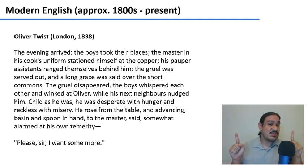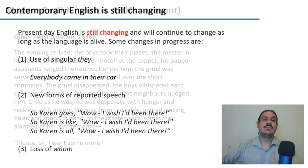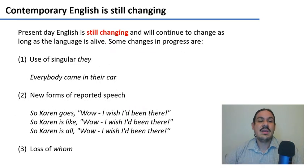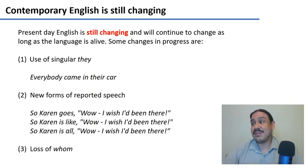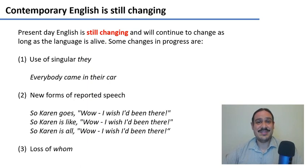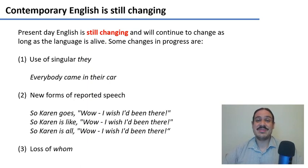For example, Old English from a thousand years ago was completely different from our English. This is a process that is natural and is unstoppable. Our English is still changing in the twenty-first century, and as long as it's alive, it will continue to change. Everything in life changes — our planet itself changes, everything that is living will have some change.